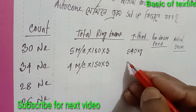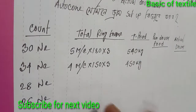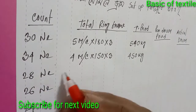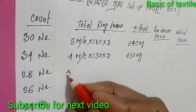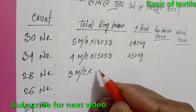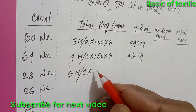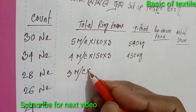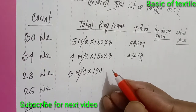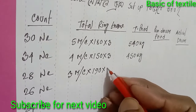For 28 count, suppose 3 machines — 8 hours, 1 machine. For 28 count, production will be 190 kg. 190 into 3.